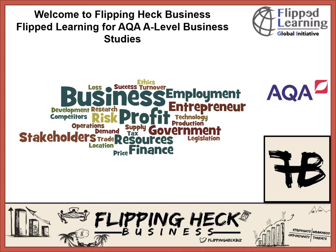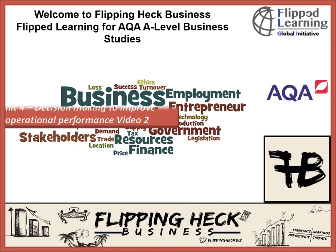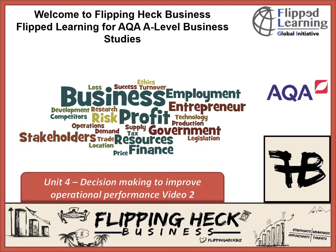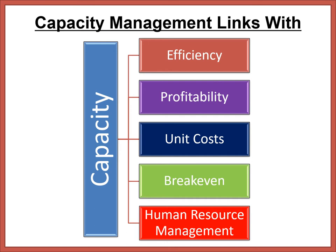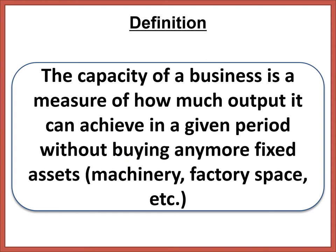Hi everyone and welcome to Flipping Heck Business, flip learning for AQA A-level Business Studies. We are now on video number two of unit four: Decision Making to Improve Operational Performance. In this video we'll be looking at capacity and capacity utilization — the meaning and importance, how it can be used efficiently, different capacity levels, under-utilization, and some considerations. Capacity management links with efficiency, profitability, unit costs, breakeven, and human resource management.